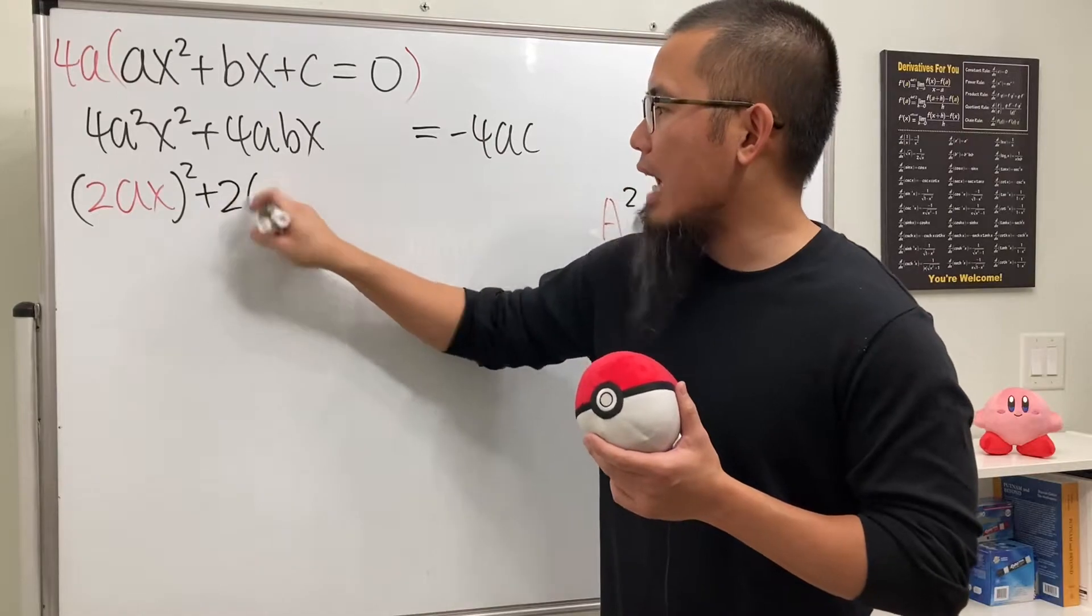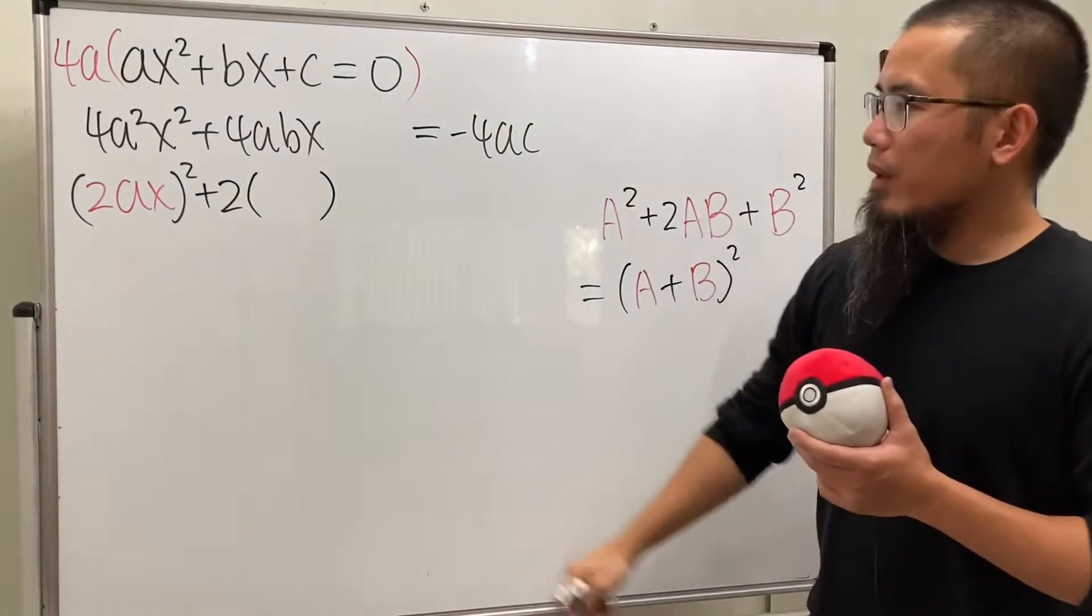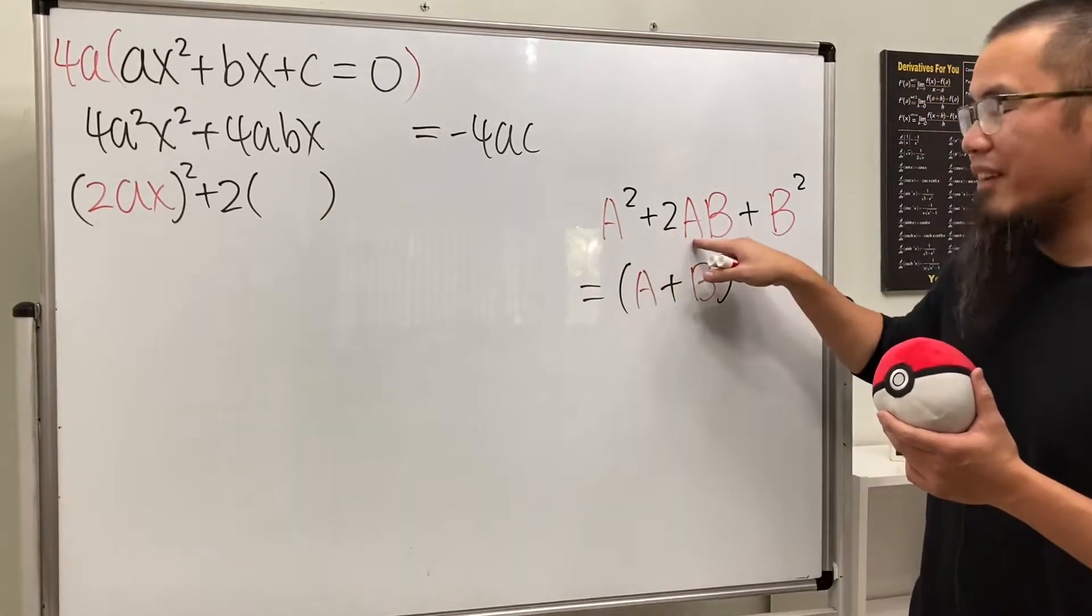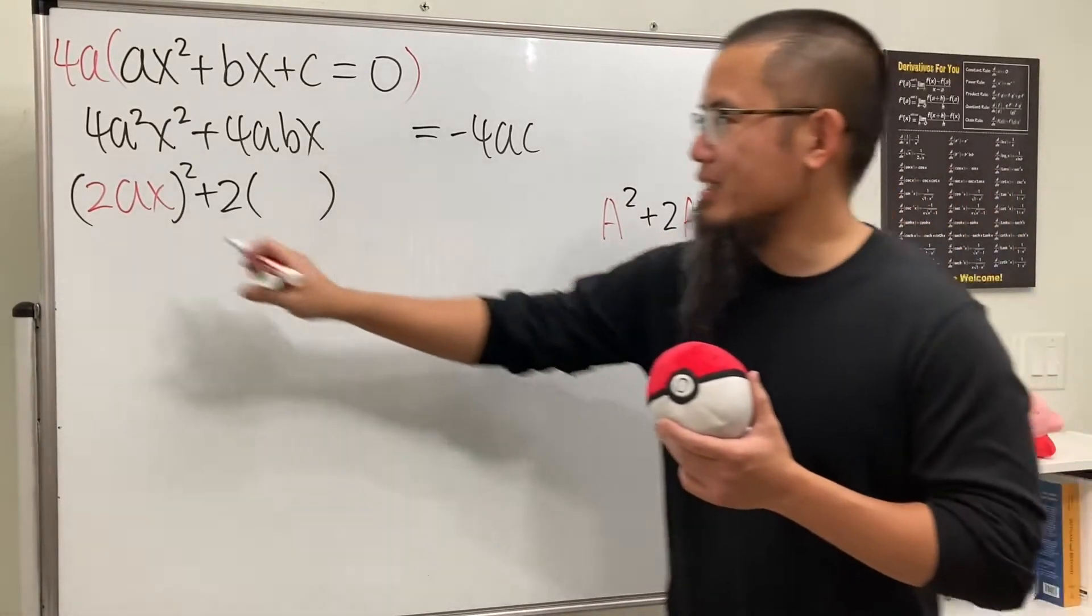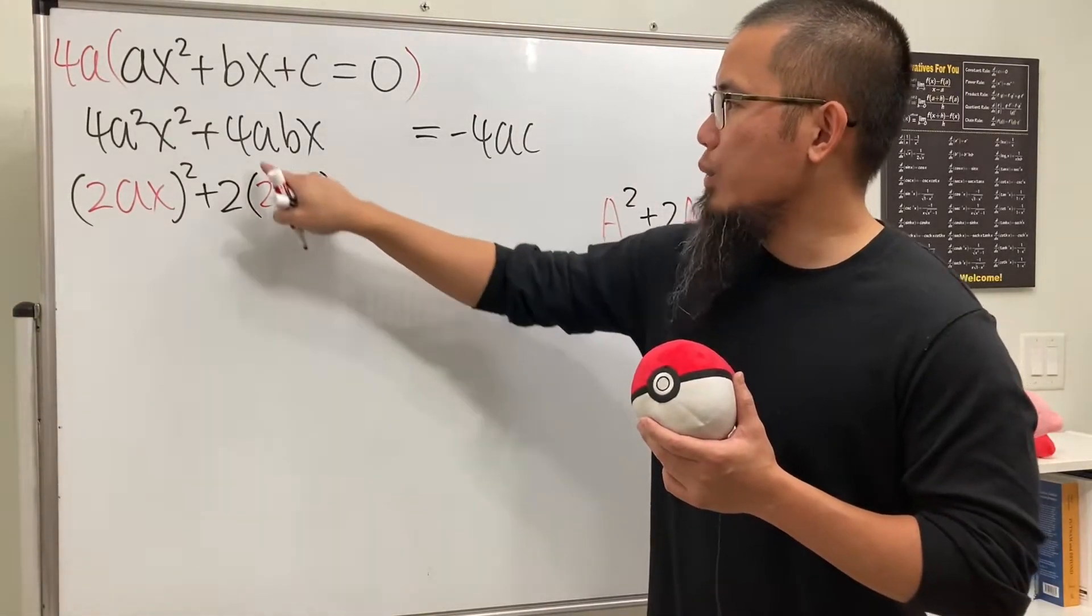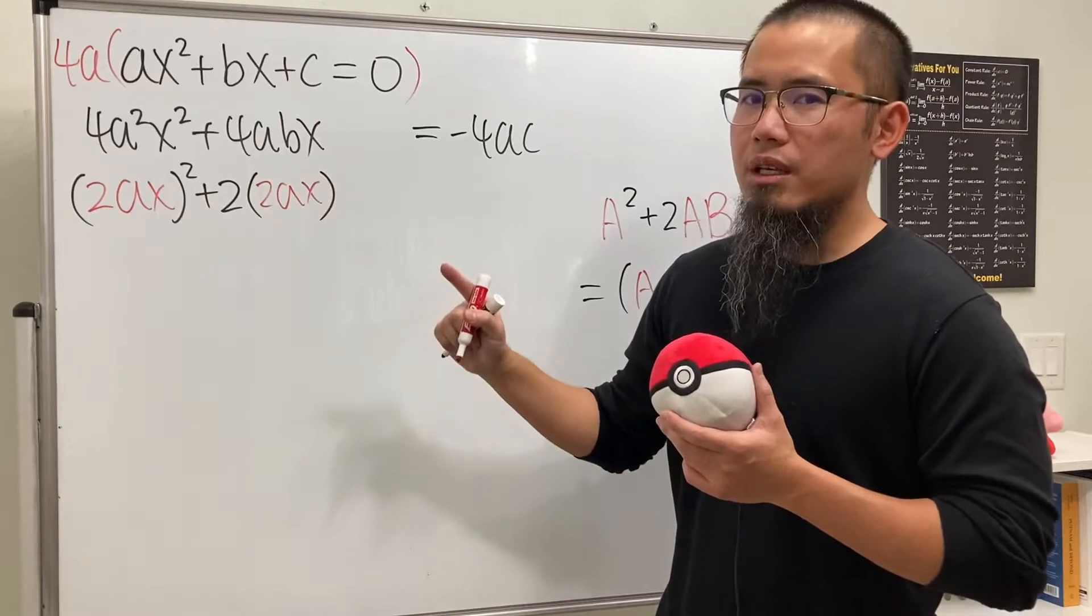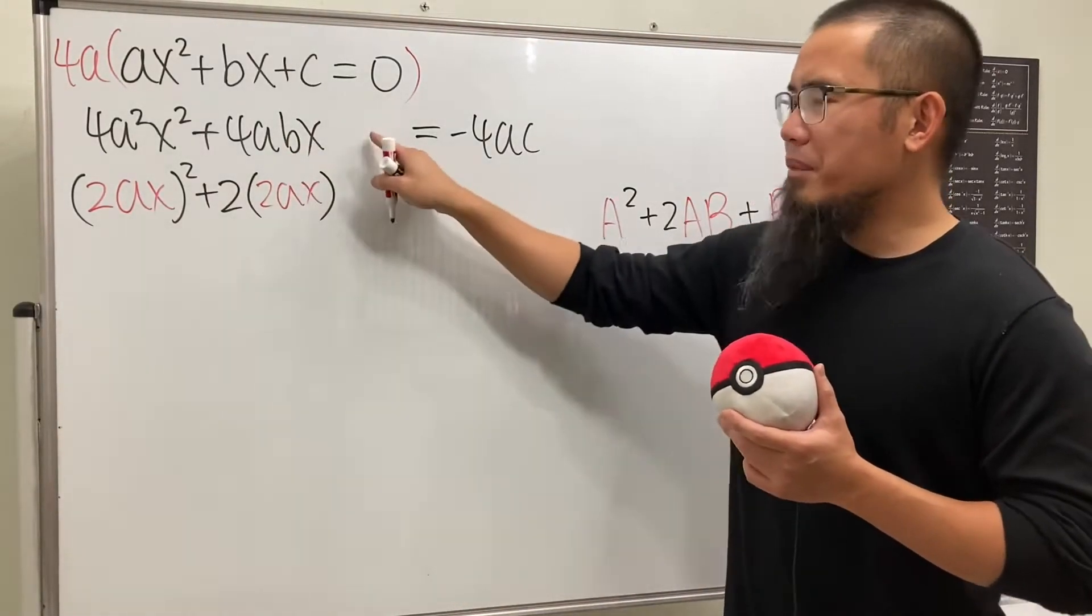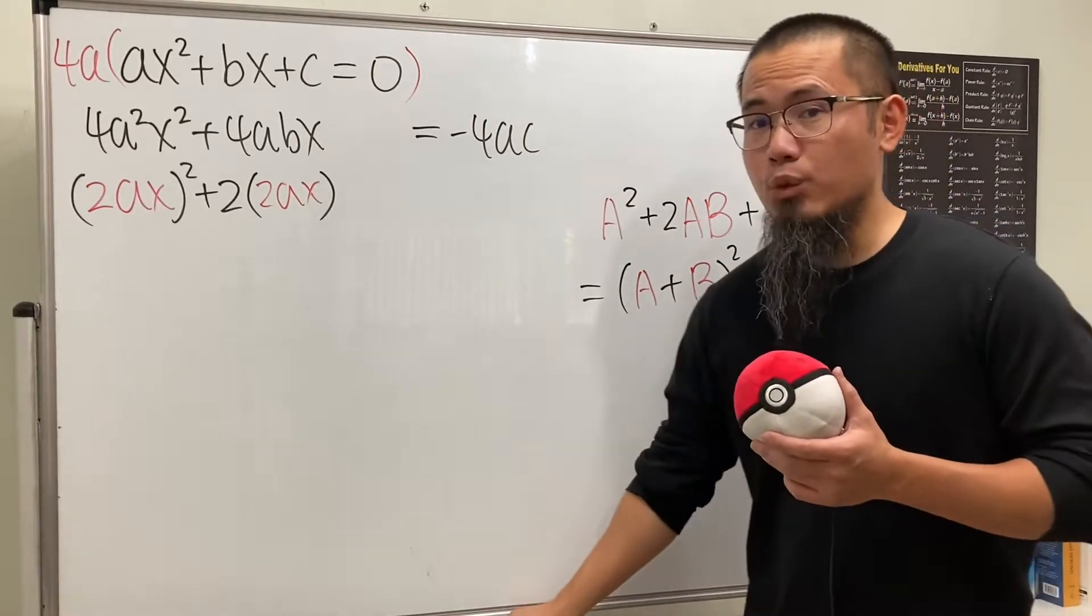I'm going to rewrite this as 2 times... well, we can also put down the first part right here. So you see the a, and we have the a, capital A. Yeah. So we can actually write that down. We have the 2ax. So you see, 2 times this, we get the 4abx already. But we have the b right here. What do we do? We are missing that part, right? And that's exactly what we need to do.